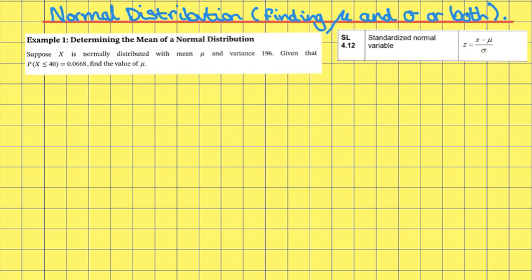In this first example we're going to determine the mean of a normal distribution. Suppose x is normally distributed with mean mu and variance 196, given that the probability of x is less than or equal to 40 is equal to 0.0668. Find the value of the mean mu.